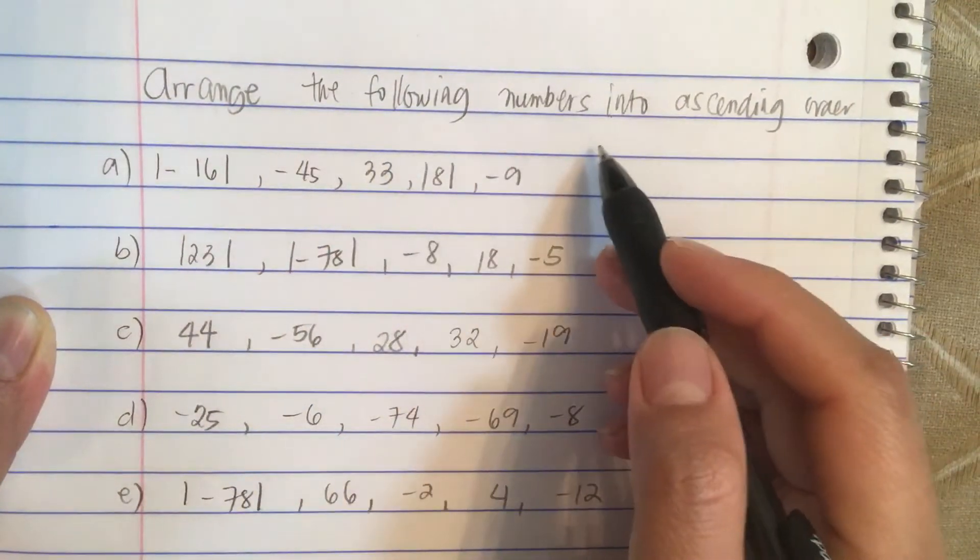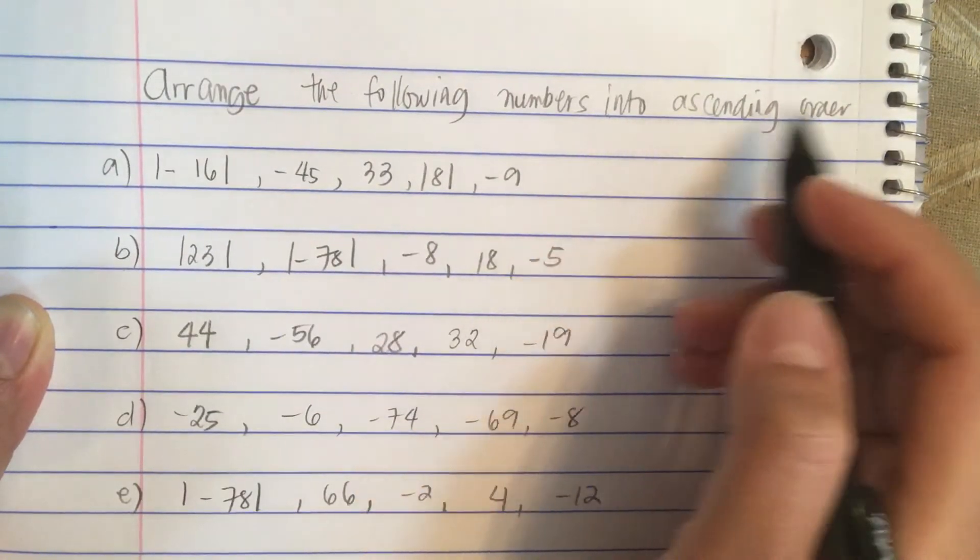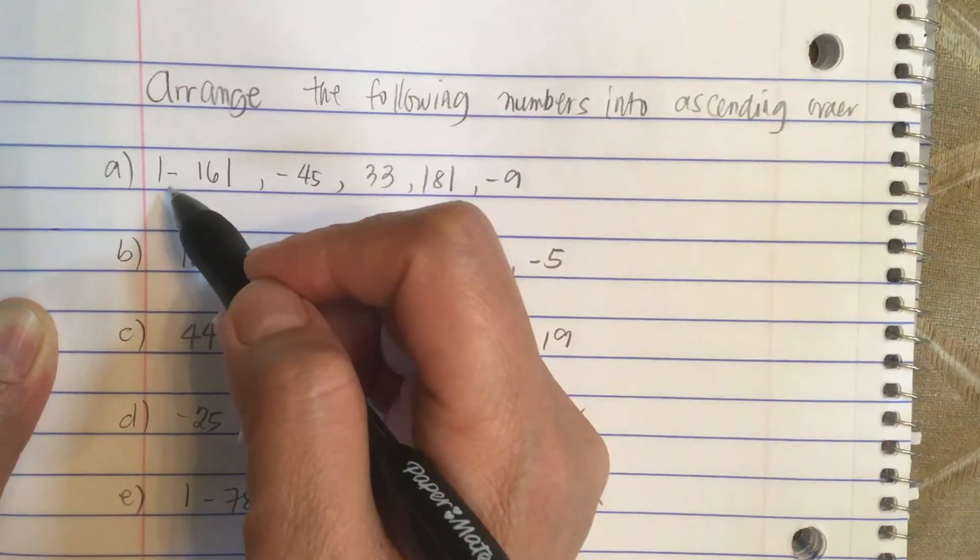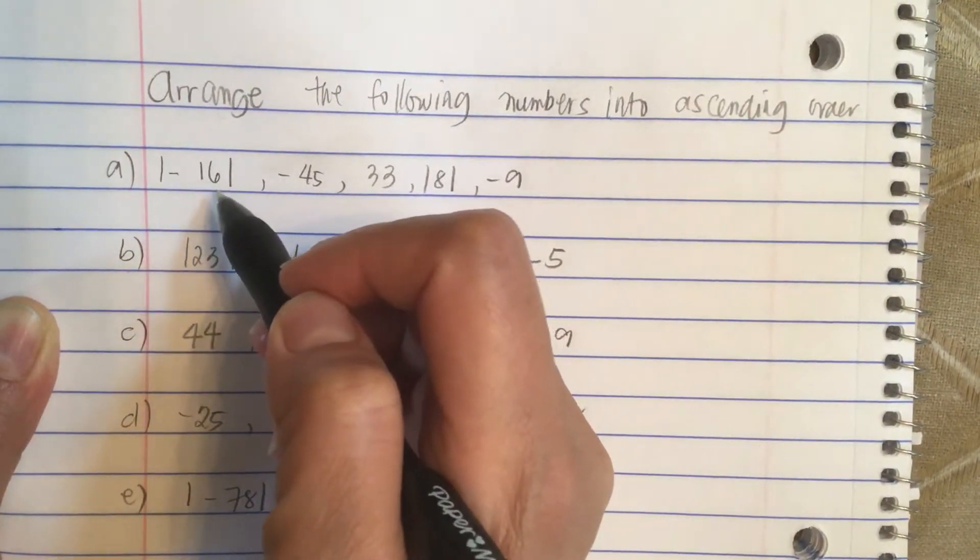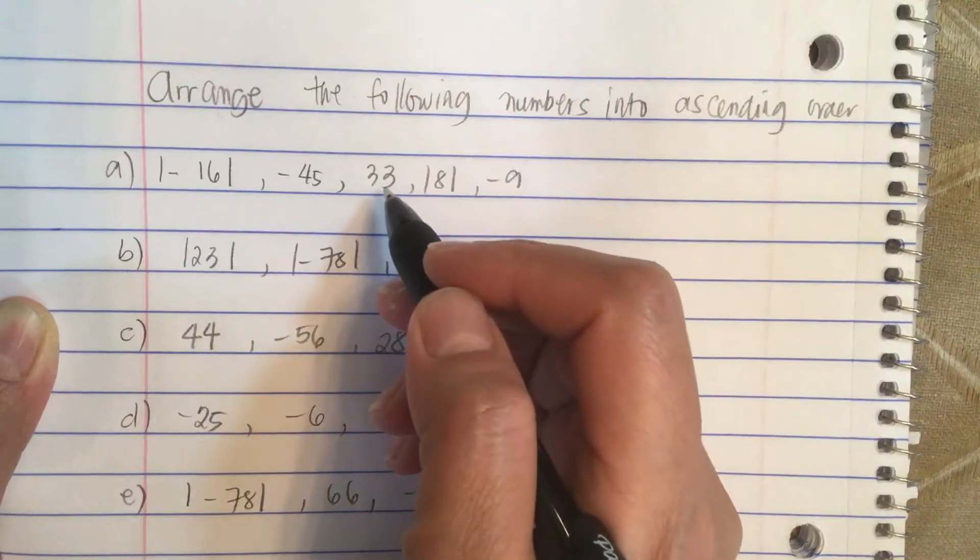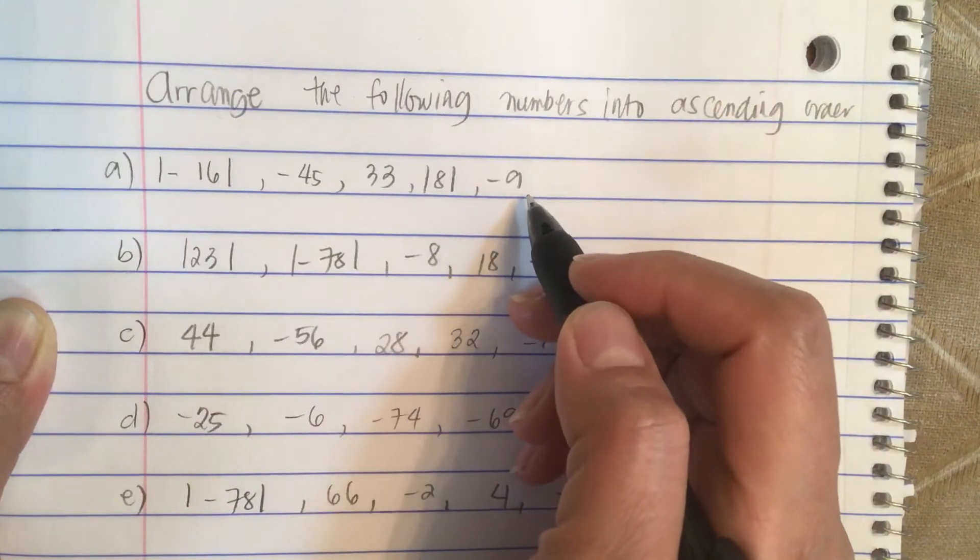Arrange the following numbers into ascending order. Ascending order means goes up. So we have an absolute value of negative 16, a minus 45, a 33, absolute value of 8, and a minus 9.